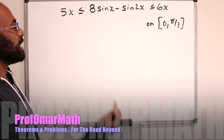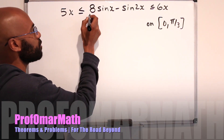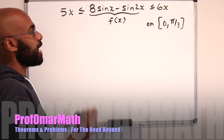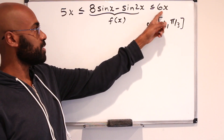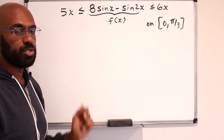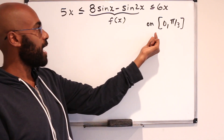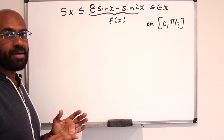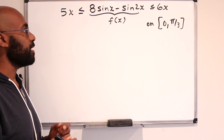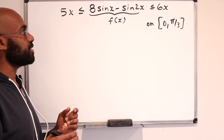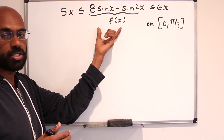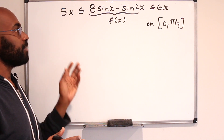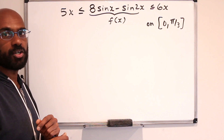In this video, we're going to look at an interesting inequality that involves a trigonometric function and bounds it by two linear functions in a variable whose constants are really close to each other. This holds for all x on the interval 0 to π/3. Before diving in, I suggest giving it a try — take the first and second derivative of the function to infer something about the function itself and bounds on it.